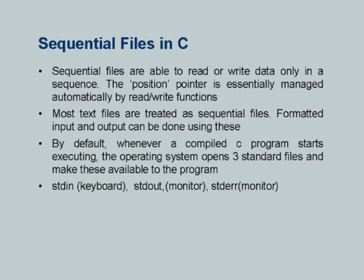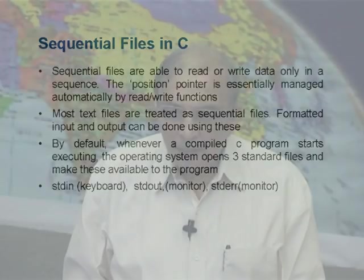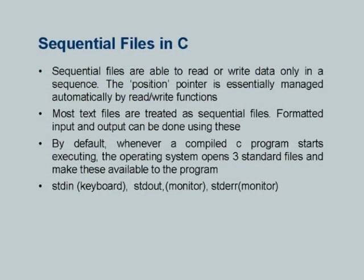Sequential files can only read or write data in sequence — the position pointer is managed automatically by read/write functions; we do not have to do anything explicitly. Most text files are treated as sequential files and formatted I/O can be done using them. An important observation: whenever a compiled C program starts executing, the operating system automatically provides it three files — stdin (standard input), stdout (standard output), and stderr (standard error).